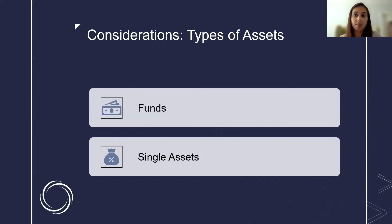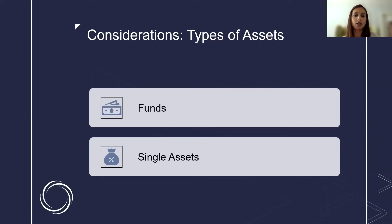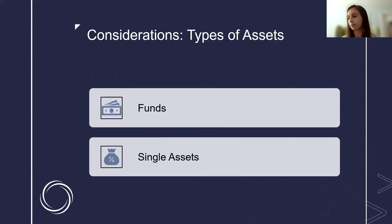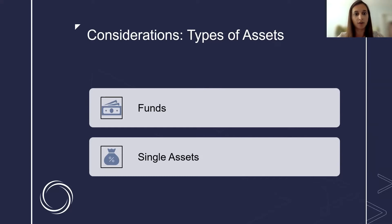The next consideration is your various types of assets. We typically use funds and single assets. For the fund structure, consider what type it is — an open fund or a closed fund, whether investors are constantly contributing capital or you're returning capital regularly — because those considerations will impact your distribution calculations and taxes. The more prominent asset type we use for multi-family properties is a single asset, where we set up a special purpose vehicle, syndicate, raise funds to purchase the asset, and the closing date aligns with the asset closing date.